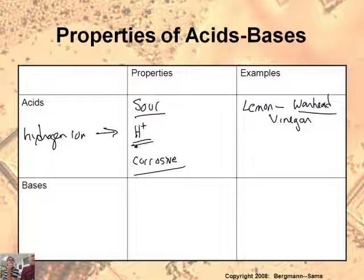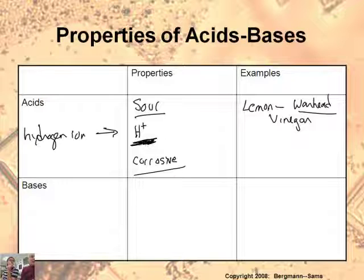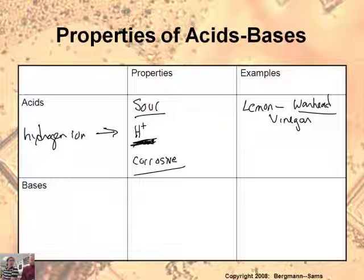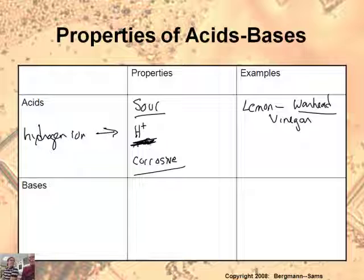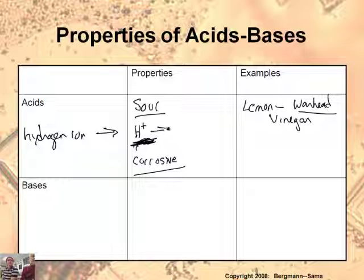A lot of people think of acids and get kind of freaked out, but there are a lot of acids that are very important and common. Some are used for cleaning agents like boric acid — they don't always turn things into evil superhero villains. Sometimes even at the eye doctor they'll put acid in your eye to help — I think it's boric acid, some kind of real dilute weak acid. So they're not always bad; there are some that are very bad and some that are not.